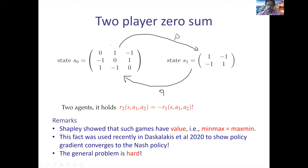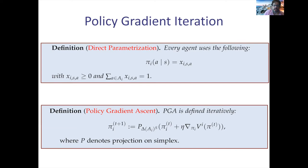Let me briefly explain policy gradient, since it's part of the title and all our results have to do with it. Before talking about policy gradient, I need to give some extra definitions. Policy gradient is an algorithm that updates the policies of the players. Policies are functions mapping states to actions — they are discrete objects. To do gradient descent or first-order methods on them, you need to parameterize these policies.